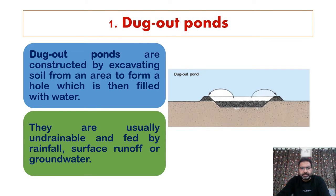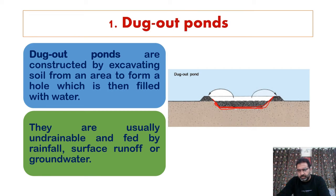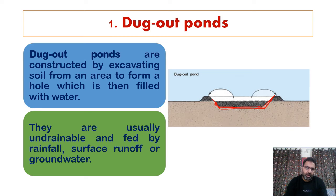According to construction method, ponds are further categorized as dugout ponds. Dugout ponds are constructed by excavating soil from an area to form a hole which is then filled with water. These are usually undrainable and fed by rainfall, surface runoff, or groundwater.